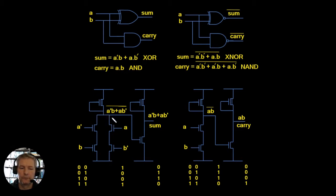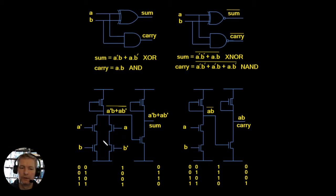Following through the inputs: for A=0, B=0, the complements are both 1. In the first branch, 1 is on and 1 is off; in the second branch, 1 is on and 1 is off. So there's no path to ground through either branch, meaning this point is pulled high — giving a 1 output. Similarly for A=1, B=1, the complements are 0 and 0, so again no complete path and the output remains high.